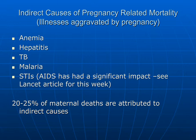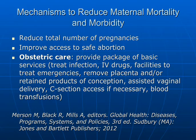Approximately 50% of pregnant women around the world are anemic. What are some mechanisms to reduce maternal mortality and morbidity? First, reduce the total number of pregnancies. Second, improve access to safe abortion. Third, and this is critical, obstetric care: provide a package of basic services — treat infections, IV drugs, facilities to treat emergencies, remove the placenta and retained products of conception, assisted vaginal delivery, and C-section access if necessary, as well as blood transfusions.